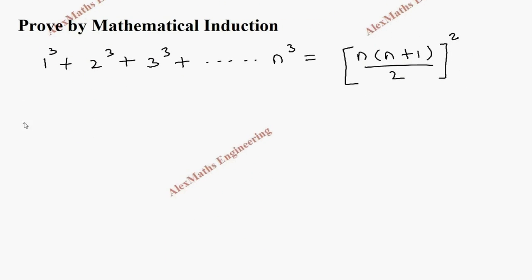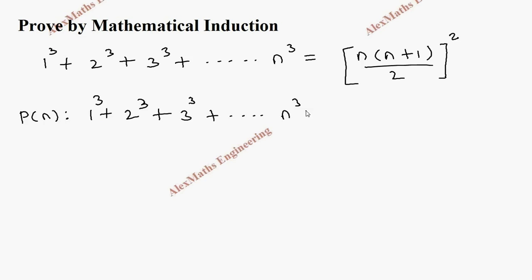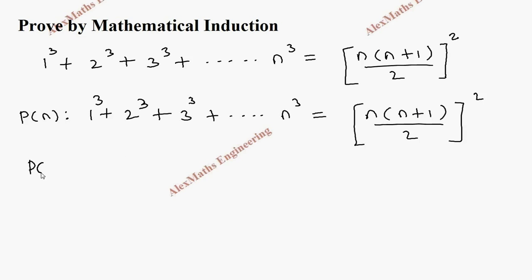This expression has two parts: left hand side and right hand side. Let's take this expression as P of n. The left hand side is 1 cube plus 2 cube plus 3 cube plus dot dot dot plus n cube, and the right hand side is n times (n plus 1) divided by 2, whole square.